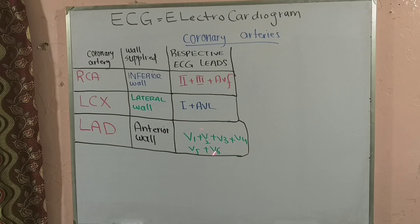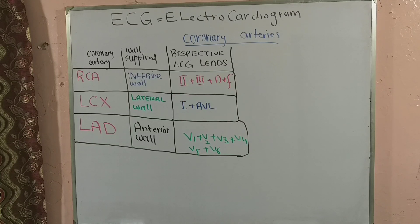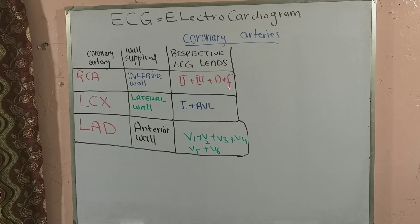The general rule is that at least two of these leads should show a change to qualify as representing a culprit artery and its wall. For example, if the left circumflex artery is involved, both lead I and aVL should show that change. For the right coronary artery, at least two of leads II, III, or aVF should be affected — these are consecutive leads. Lead I and aVL are consecutive leads, as are leads II, III, and aVF.